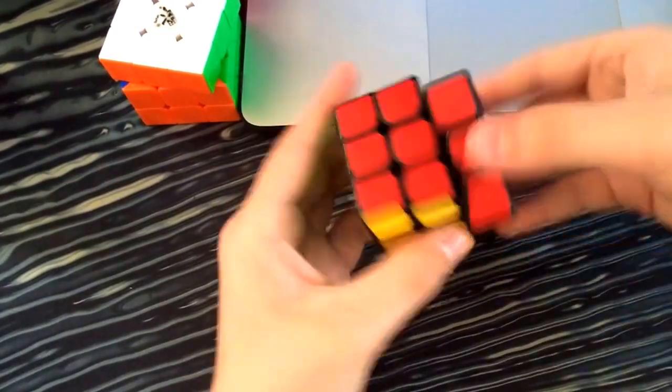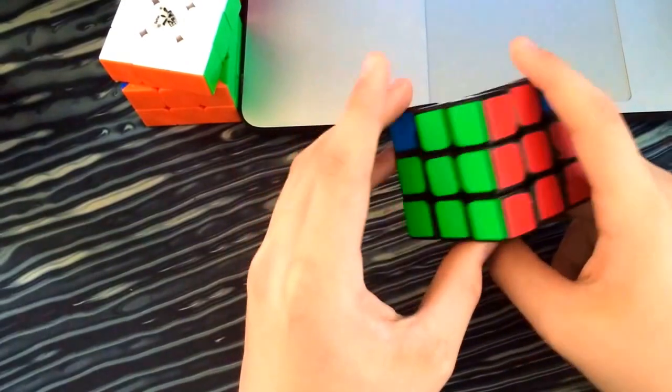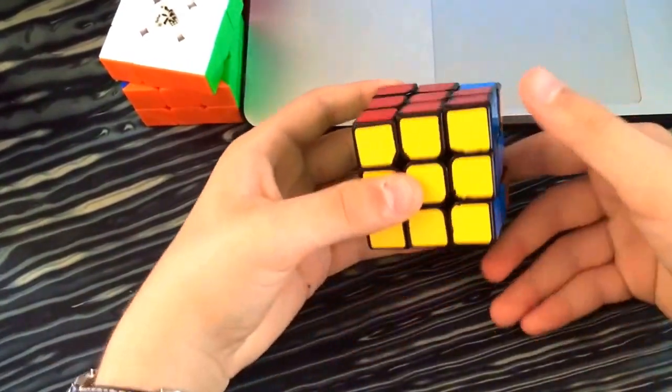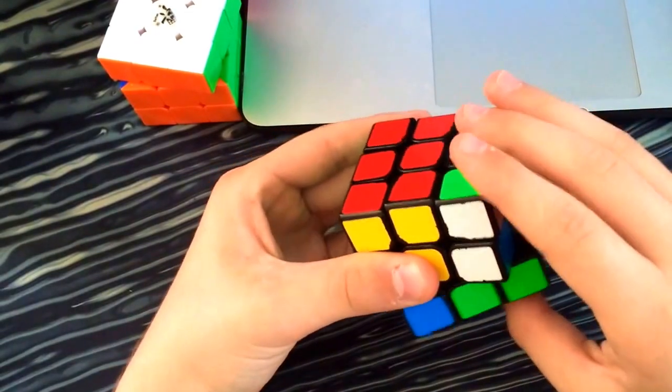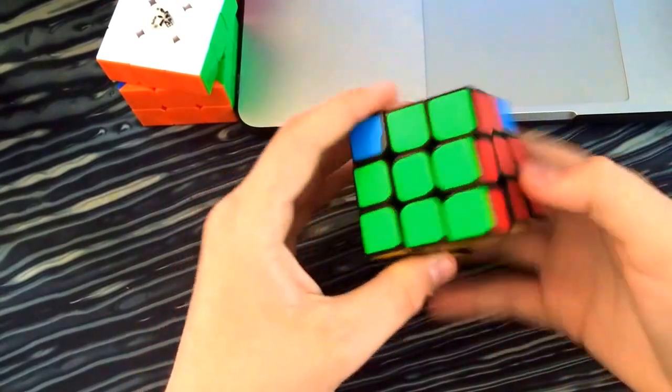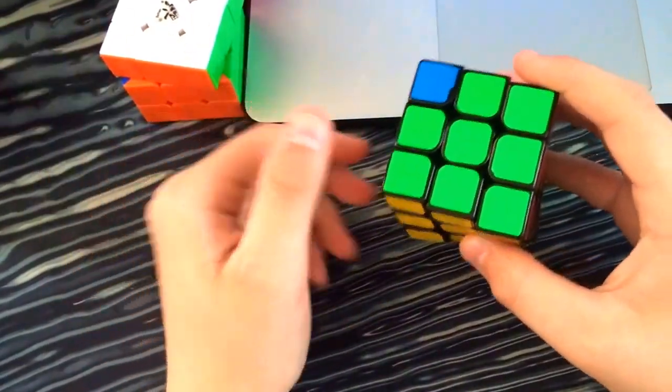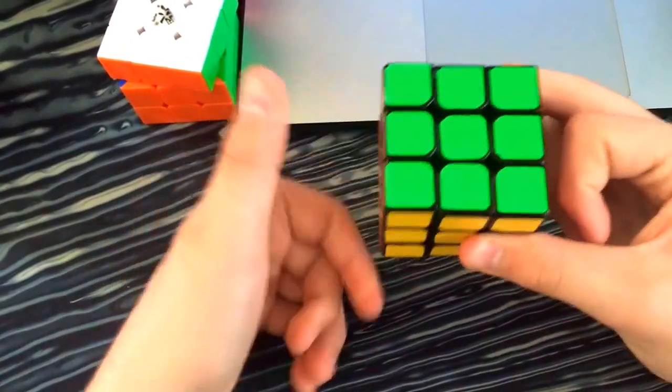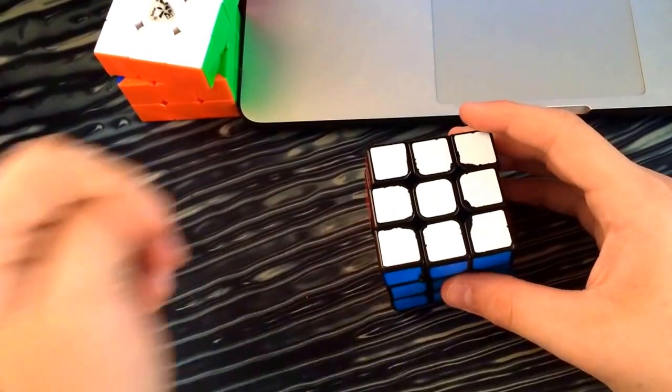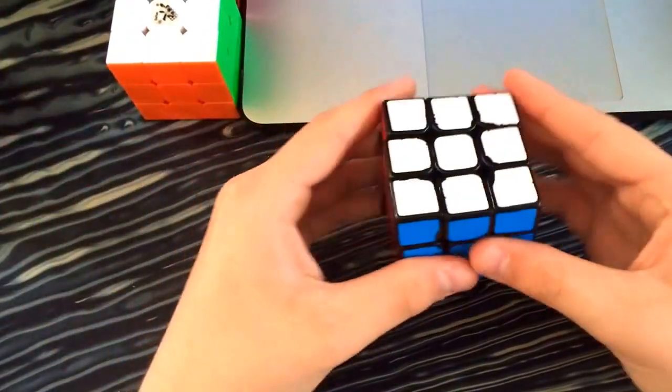So for the other A perm, I see the headlights here and I see the dot here. Or the opposite here. I execute like this. Or what I will do is I'll do the A perm with the first one but on the left side. I tend to do that one more. Because I can do lefty algs as easily as I can with righty algs.